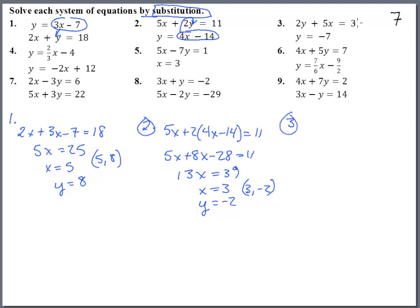Number 3. 2y plus 5x equals 3. And it says that y is negative 7. Hey, look at that. They gave us half of the answer. That's wonderful. So we stick that in there. We get negative 14 plus 5x equals 3. Add 14 to both sides. And we get 5x equals 17. And x equals 17 fifths. So 17 fifths and y was negative 7 is where those two lines will intersect.